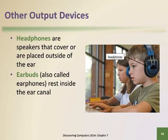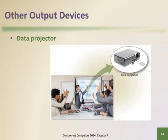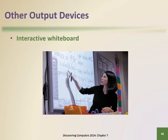A data projector is a device that takes the text and images displayed on a computer or mobile device screen and projects them on a larger screen, making it useful for displaying to an audience. An interactive whiteboard is a touch-sensitive device, resembling a dry erase board, that displays the image on a connected computer screen.